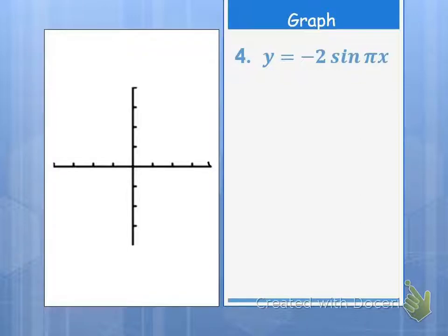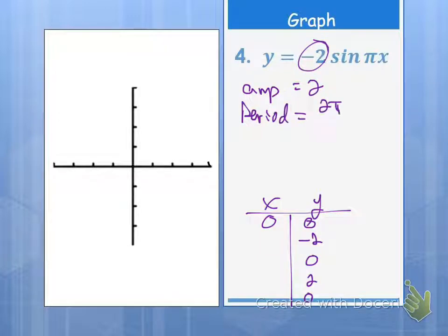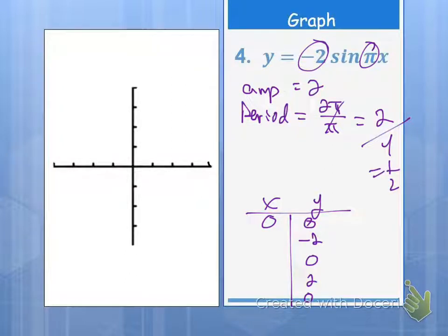The next one is a little bit weird, so let's take a look at it together. The amplitude is still going to be 2, but look — it's negative. So creating a t-chart, we're going to start at 0, 0. Then our y-values are going to go to negative 2, 0, positive 2, and then back to 0. The x-values come from our period. The period is 2π divided by b, and b is π, so the π's divide out and you get 2. So our period is actually 2.